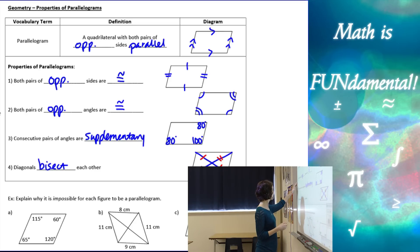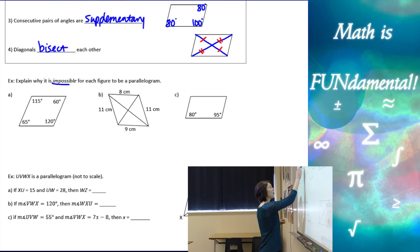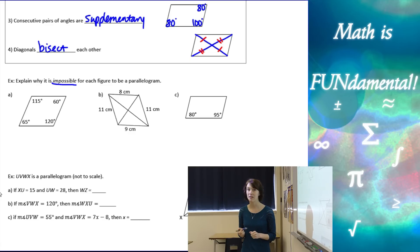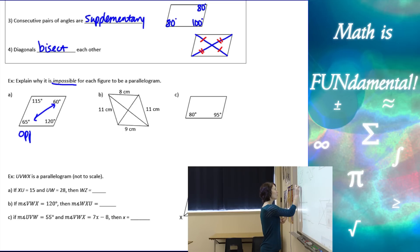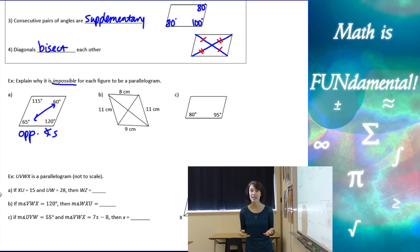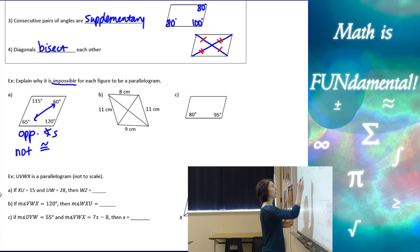Let's look at the next example: explain why it is impossible for each figure to be a parallelogram. For the first one, if we look at those opposite angles — we know that in a parallelogram opposite angles have to be congruent, but these ones are not congruent, which is why it's impossible.